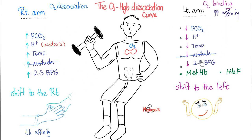On the left arm the exact opposite happens — the red blood cell keeps oxygen to herself and does not give any oxygen to the tissue, because all available oxygen needs to go to the right arm which needs more. Economics is the study of scarce resources with alternative uses — there is no unlimited amount of oxygen, so your body has to economize.